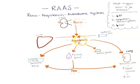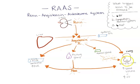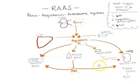Angiotensin II also activates the adrenal glands — which sit on top of the kidneys — to release aldosterone. Aldosterone also tells the kidneys to hold onto water, increasing blood volume and therefore stroke volume and cardiac output. The four hormones involved are renin, angiotensin II, ADH, and aldosterone — all of which increase cardiac output and peripheral vascular resistance, therefore increasing blood pressure.